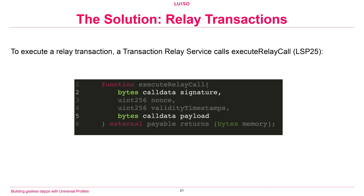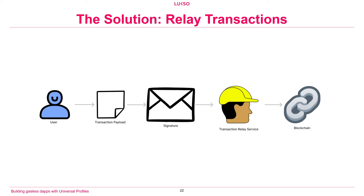The executeRelayCall function has two key parameters: the payload — the content of the action the user wants to perform, such as minting an NFT, sending tokens, or updating a username — and the signature, which is that action signed to prove it's them. The full flow: the user has an action they want to perform, they package it by signing it, send it to the transaction relay service, and that relay service sends it to the blockchain. Because the relay service executes the transaction, the relay service pays the gas.